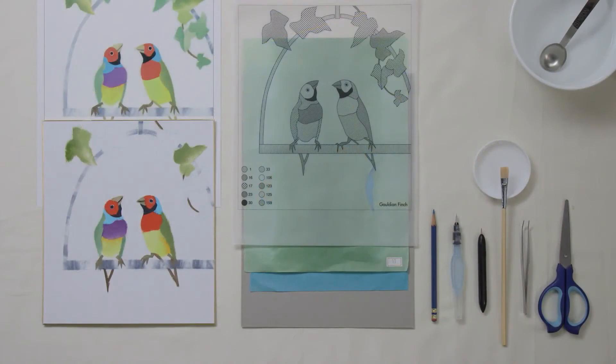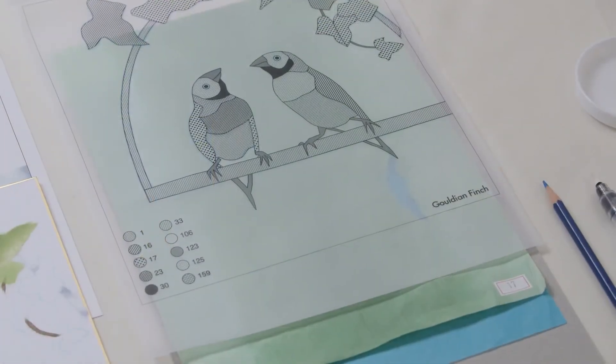Repeat the process with washi paper number 17. Take the rest of the leaves.